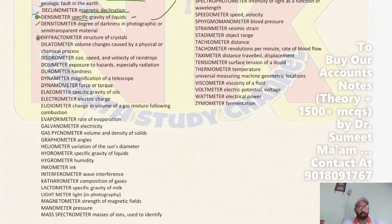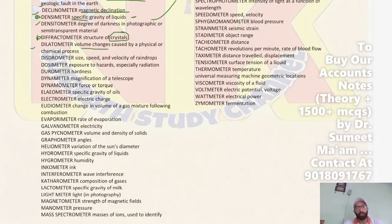Next, Diffractometer is used to measure the structure of crystals. Next, Dilatometer is used to measure volume changes caused by physical and chemical processes. Next, Disdrometer is used to measure the size, speed and velocity of raindrops.